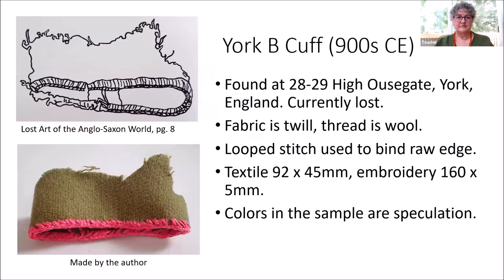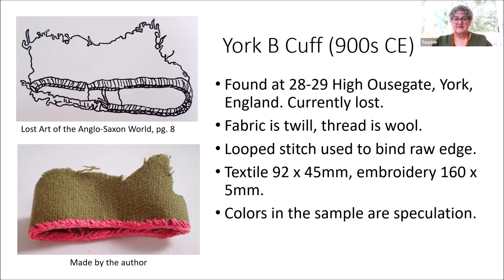The York B cuff is from the 900s. It was found in York and is currently lost. There is a drawing of it in Lost Art of the Anglo-Saxon World. I made my own archaeological find reproduction just to see how big it was. The fabric is twill, the thread is wool, and a loop stitch was used to bind the raw edge of the cuff. It's very, very small — if I was going to guess, I would say it went around the wrist of a child. The colors are speculation; I made it with high contrast so you could see it on the slide.